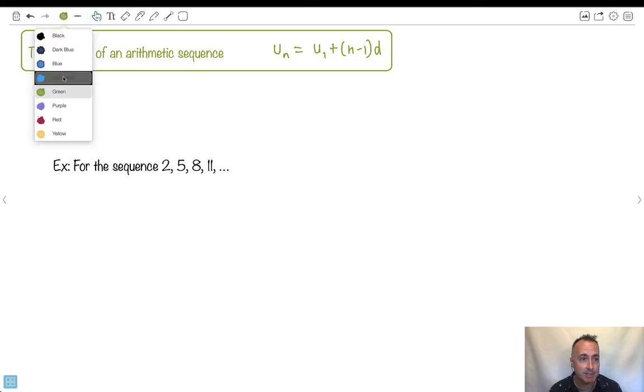So that's how this works. For example, in this particular one right here, let's characterize it by these two things here. We have U1, which is the first term. Well, that's going to be 2. That's the first term. And d, the common difference.